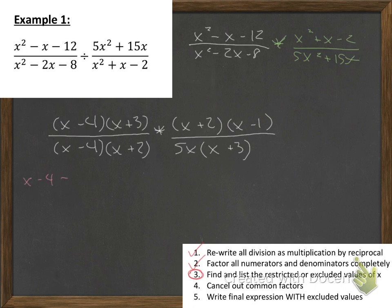So let's find our restricted or excluded values. We have x - 4 not equal to 0. We have x + 2 not equal to 0. We have 5x not equal to 0. We have x + 3, also not equal to 0. So we have x cannot be equal to 4, x cannot be equal to negative 2. Here, we have to divide by 5. 0 divided by 5 is just 0. So x cannot be equal to 0. And last but not least, x cannot be equal to negative 3. So in this problem, we have not 1, not 2, not 3, but 4 restricted values.